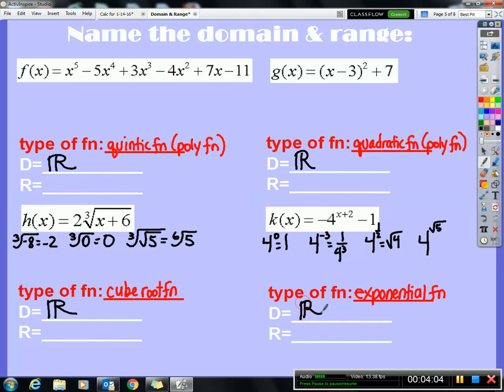Guys, what I'm trying to show you here is any polynomial function, like the top two, any cube root, fifth root, seventh root function like h of x, and any exponential function like k of x, they all have domains that are all real numbers. They've got simple domains. So you want to keep it simple when you can.